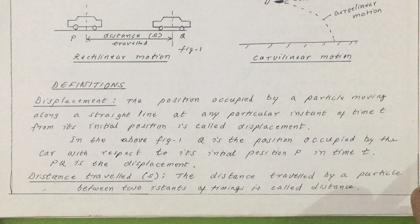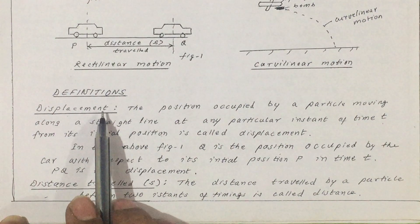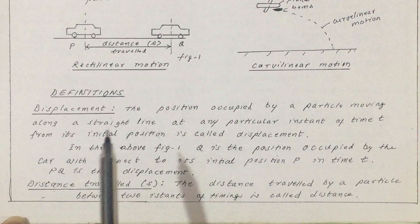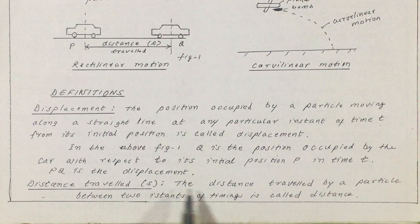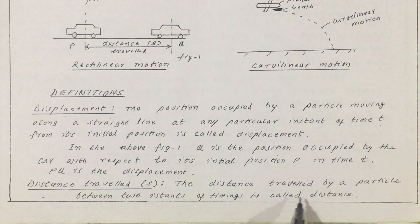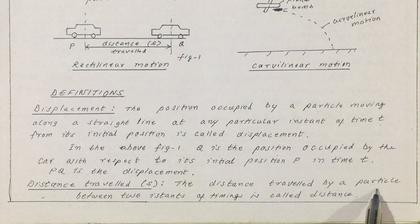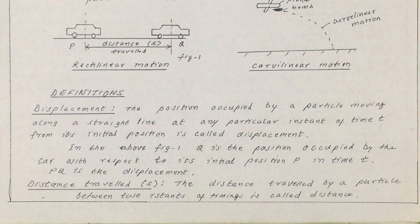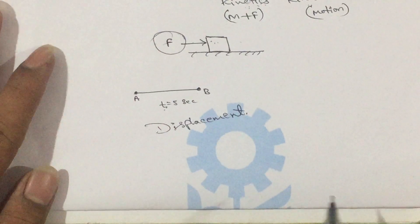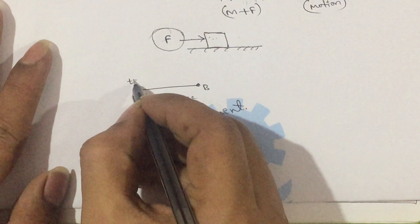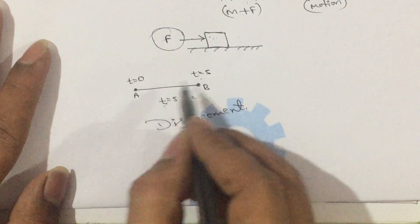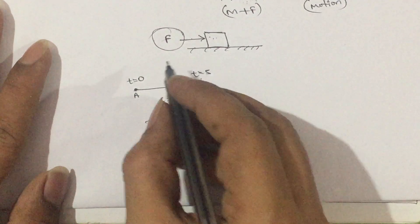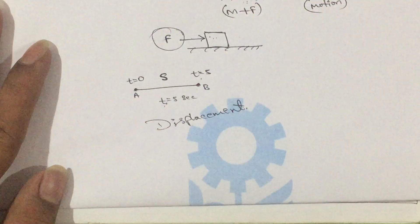Now, what do we mean by distance? Distance and displacement are two keywords from basic education. The distance travelled by a particle between two instants of time is called distance. For example, if a vehicle moves from point P to point Q — initially at time t1 and finally at time t2 — the time interval is t2 minus t1, and the distance travelled in that interval is S.